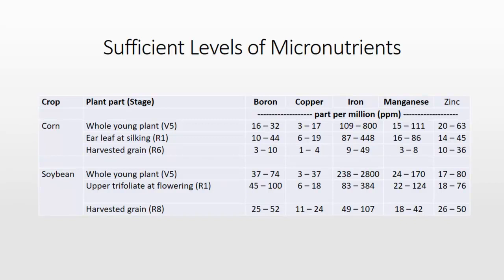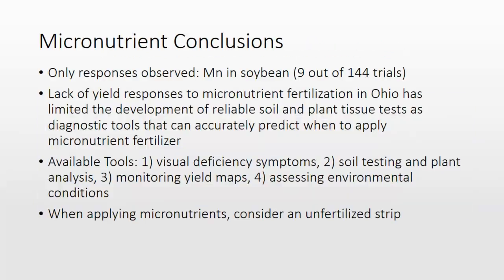We conducted trials with an entire micronutrient blend and analyzed the crop. We did this a couple of different years at three different sites across the state, analyzing tissue at V5 for corn, R1 for corn, and then grain for corn, as well as soybean at comparable time periods. This is not definitive, but we did not see any yield response. We can take this collection of data — available in that go.osu.edu fact sheet — suggesting that if you have these tissue levels, it's unlikely you'll see a yield response to fertilization.